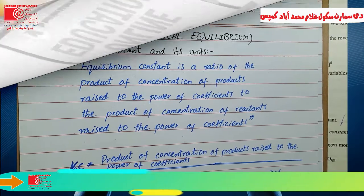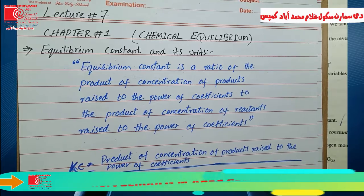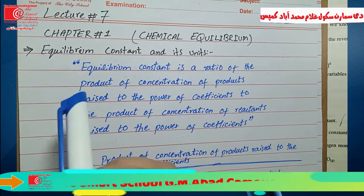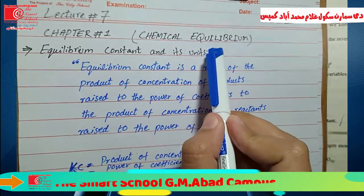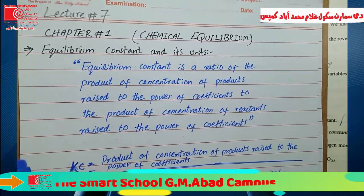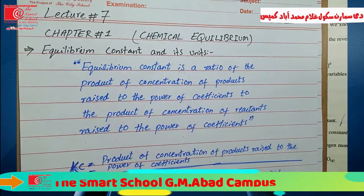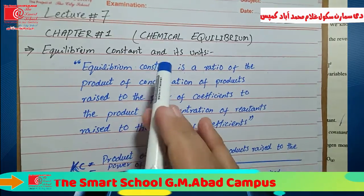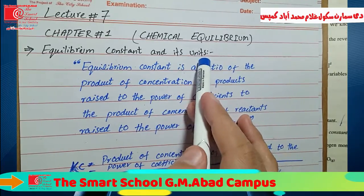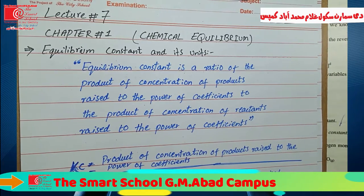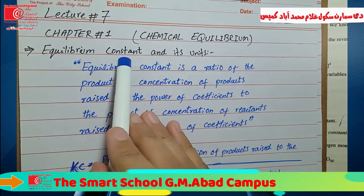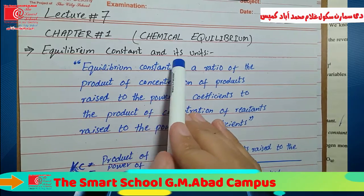This is your chemistry class and we are studying chapter number one: chemical equilibrium. Today's topic is equilibrium constant and its units.